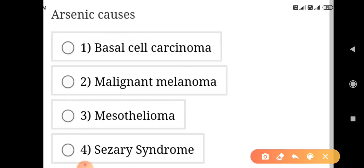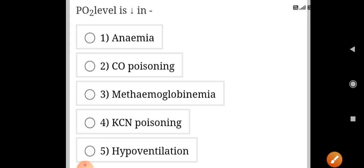Arsenic causes muscle cell carcinoma. PO2 level is decreased in hypoventilation.